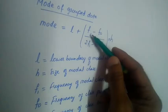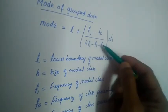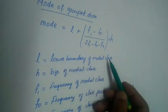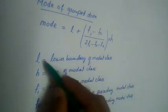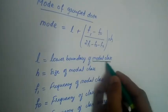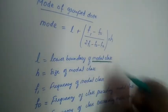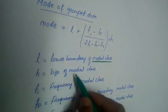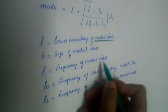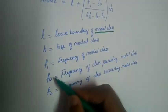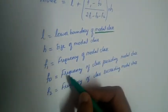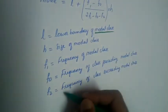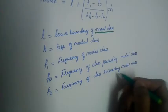What is L, F1, F0, F2, and H? L is the lower boundary of the modal class. H is the size of the modal class. F1 is the frequency of the modal class. F0 is the frequency of the class preceding the modal class, and F2 is the frequency of the class succeeding the modal class.